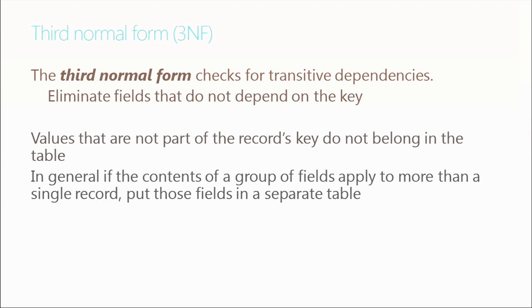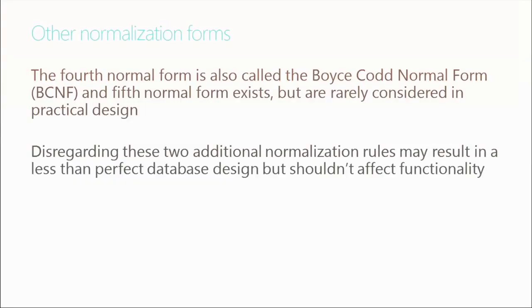Third normal form checks for what are called transitive dependencies — it eliminates fields that do not depend on the key. If there's extraneous information not relevant to the main entity, it goes into a separate table. When massaging data to third normal form, we make sure there are no columns not directly related to the subject — like our CD. In general, if the contents of a group of fields apply to more than a single record, they require a separate table.